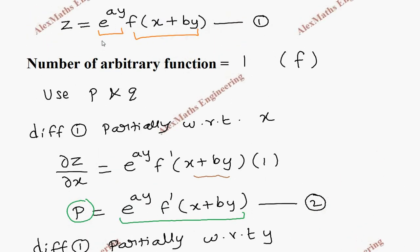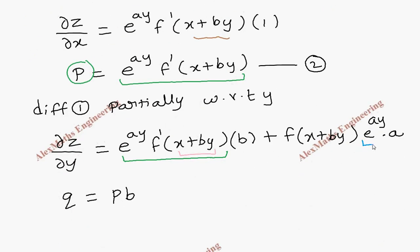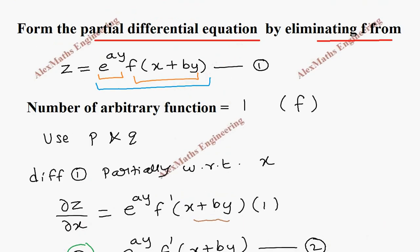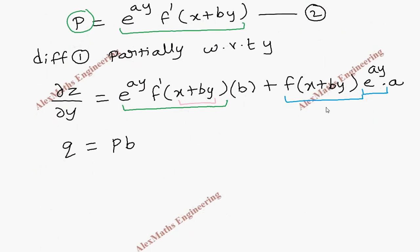From the question we notice this entire term e^(ay) · f(x + by), that is e^(ay) · f(x + by), is nothing but the other side is z. So that z can be replaced here.